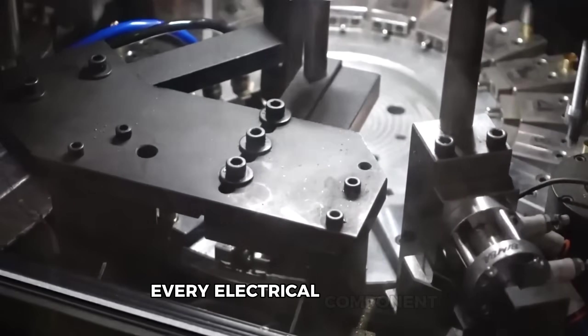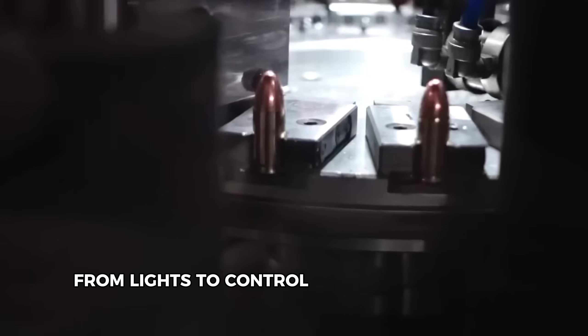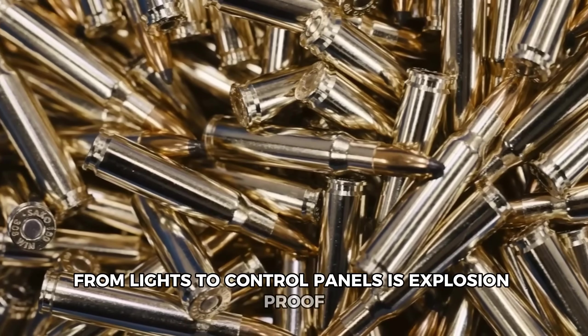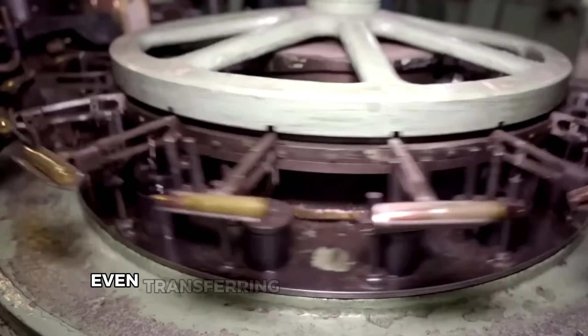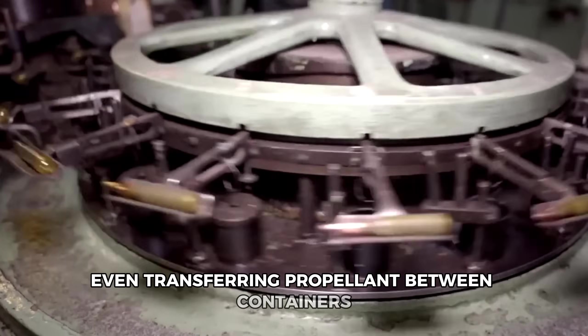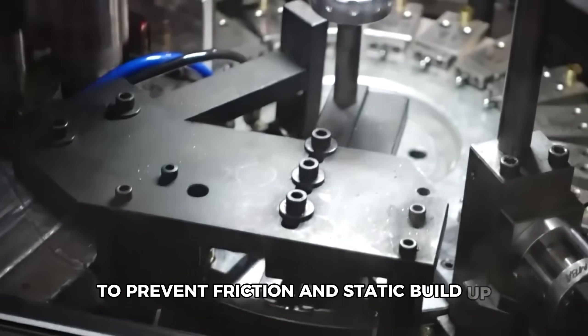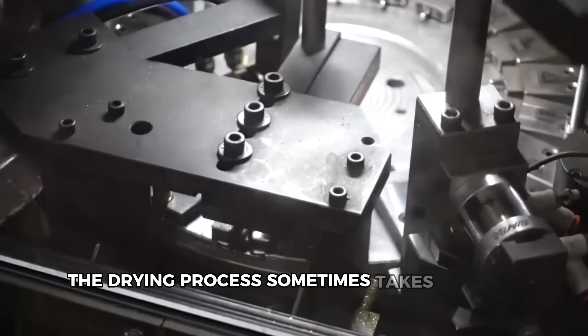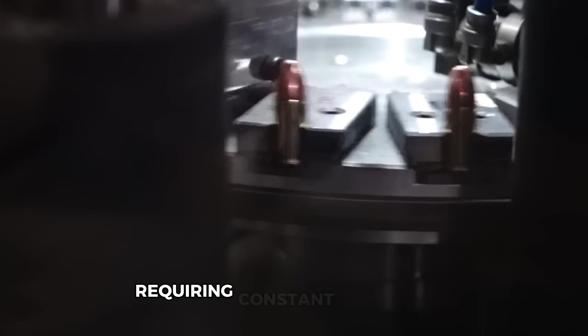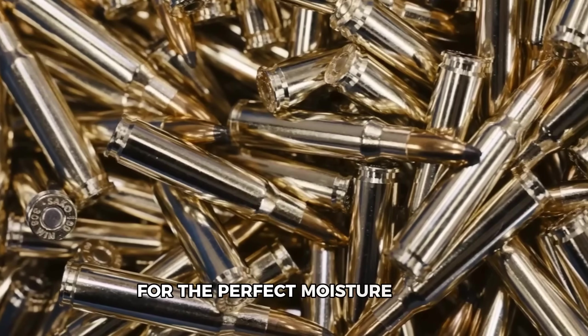Every electrical component, from lights to control panels, is explosion-proof, designed to contain any spark. Even transferring propellant between containers involves careful procedures to prevent friction and static build-up. The drying process sometimes takes days to complete, requiring constant monitoring for the perfect moisture level.